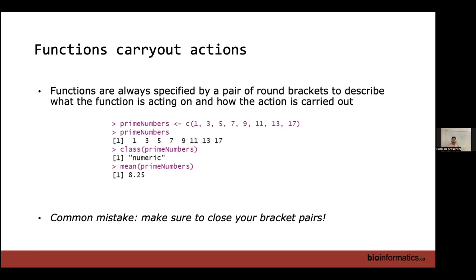R is actually very forgiving of spaces compared to some other languages — spaces between comma-separated values are fine and a matter of personal preference. However, convention-wise, you shouldn't have a space between the function name and the start of the round bracket since they go together. If you're working on code with multiple collaborators, it's worth sitting down to talk about coding practices beforehand, or you might drive each other crazy correcting personal preferences.